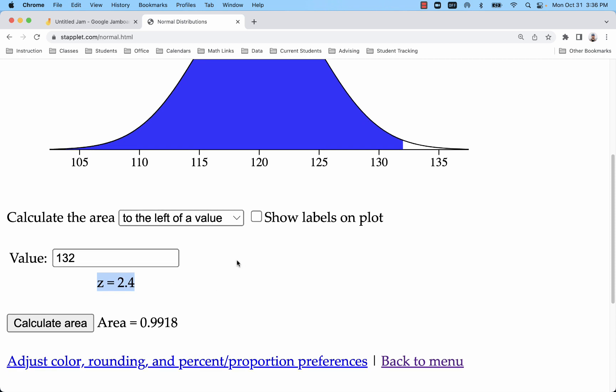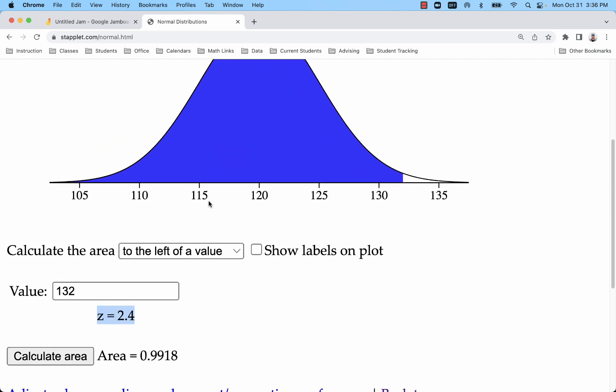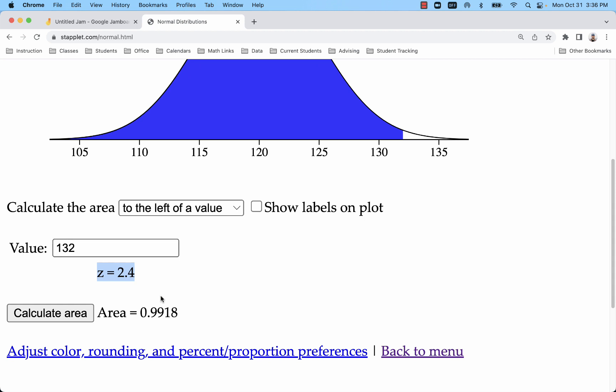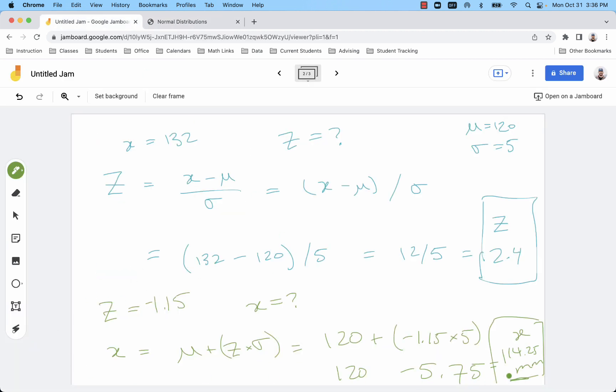But there's no way to do it the other way around. If I have a Z score, I can't type it in and convert it to a value. So that's the one in green, where you have some of those on the homework, because it's something that Staplet will not do.